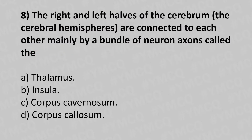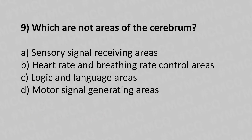Question 8: The right and left cerebral hemispheres are connected to each other mainly by bundles of neurons called — Option A: thalamus. Option B: insula. Option C: corpus cavernosum. Option D: corpus callosum. The answer is Option D — corpus callosum.